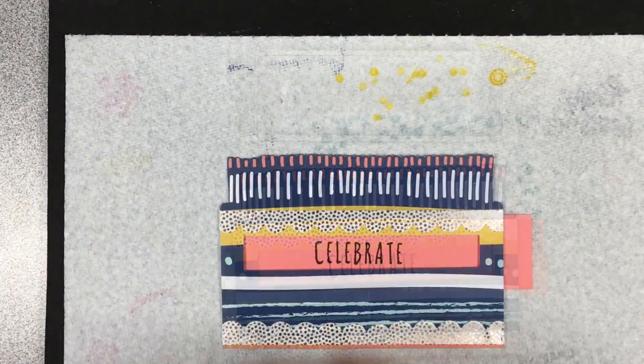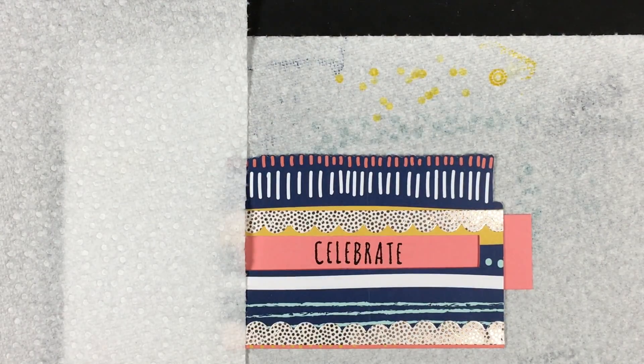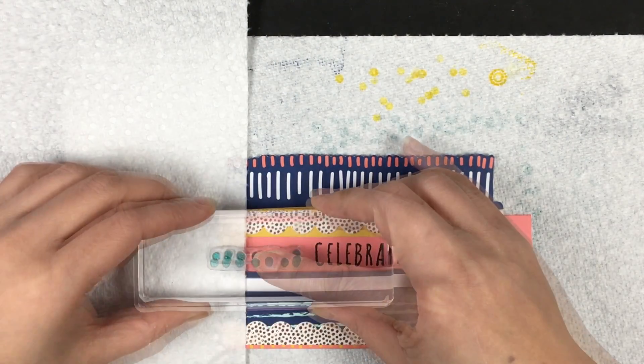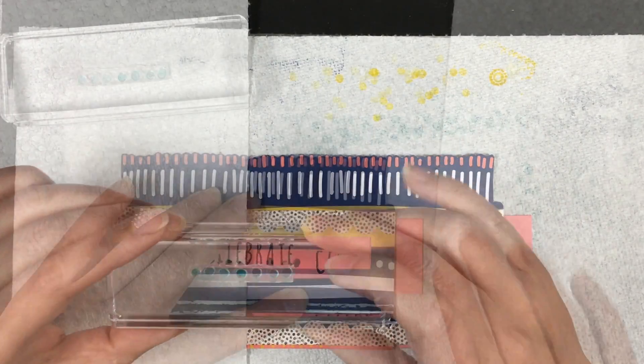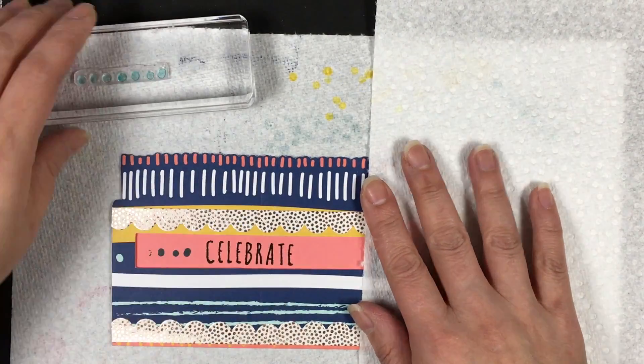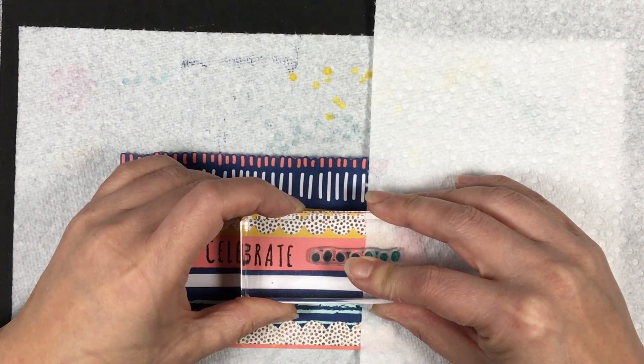Then we're going to stamp the dots with Bermuda Bay. I didn't have anything on my desk that I could use to mask off the side there other than paper towel, and I didn't do a very good job on that end, but we'll fix that in just a second.